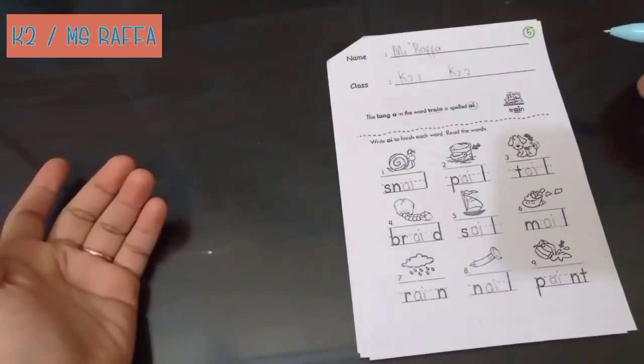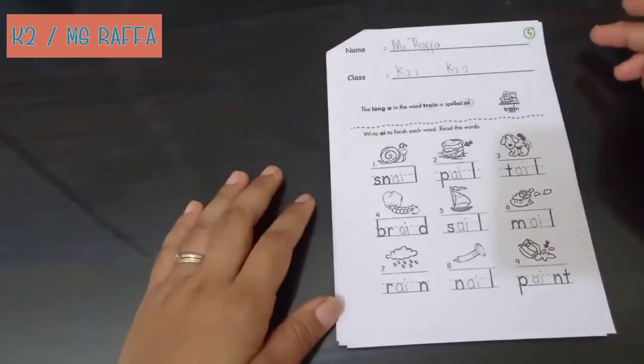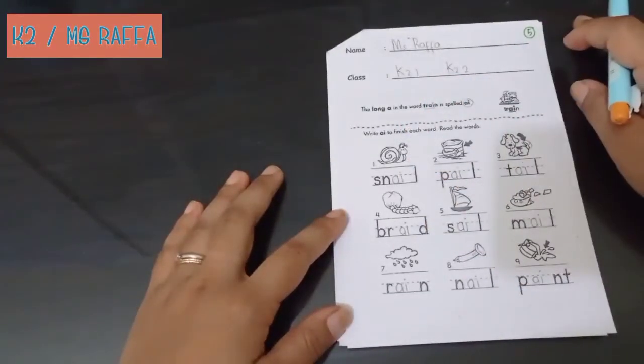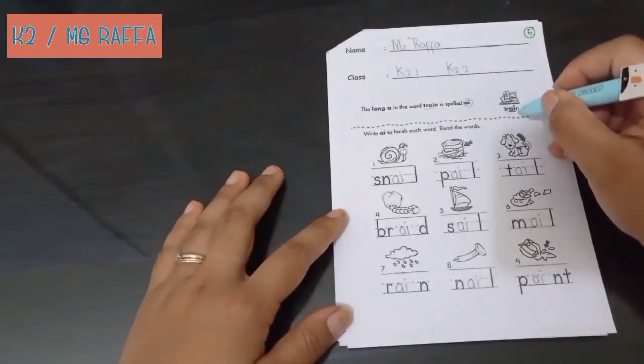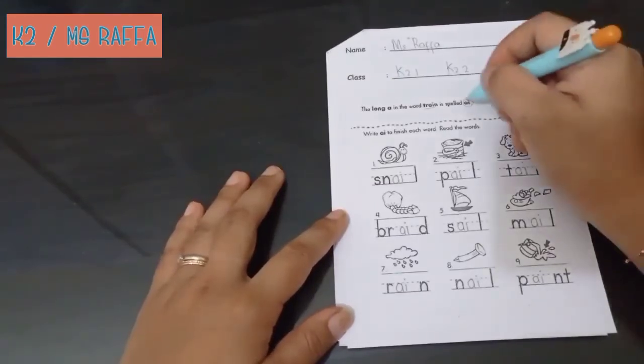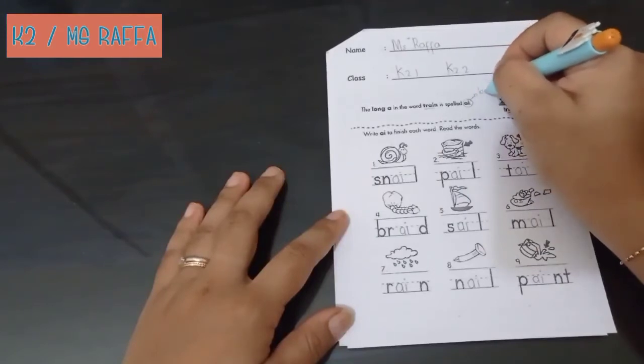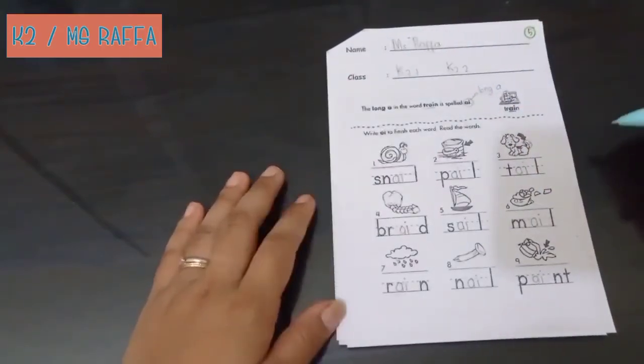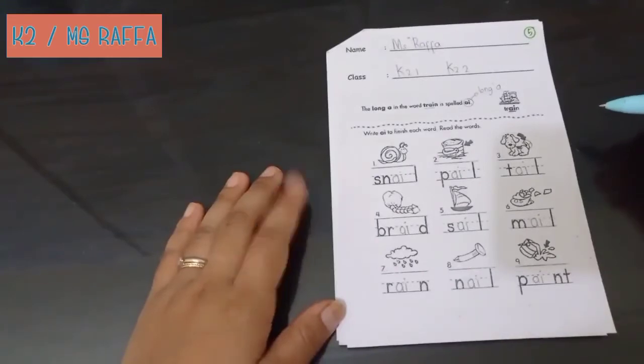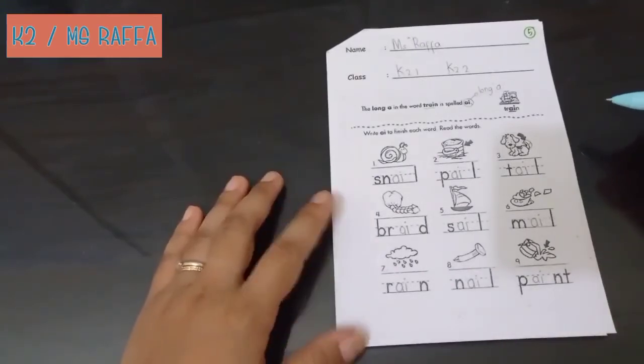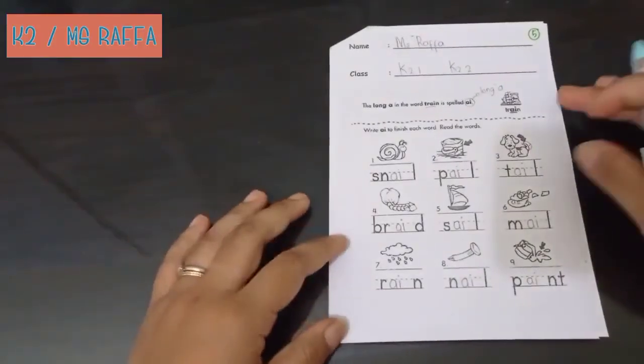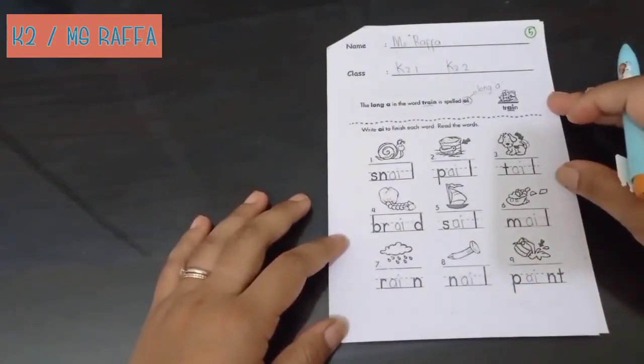Can you do that for K2.1 and K2.2? We study about the long A-I. Okay. This is a long A. AI is the long A in the word. Okay. We will study it again in the class. Thank you. In the zoom class, I mean. Okay. Thank you and see you again, K2.1 and K2.2. Bye.